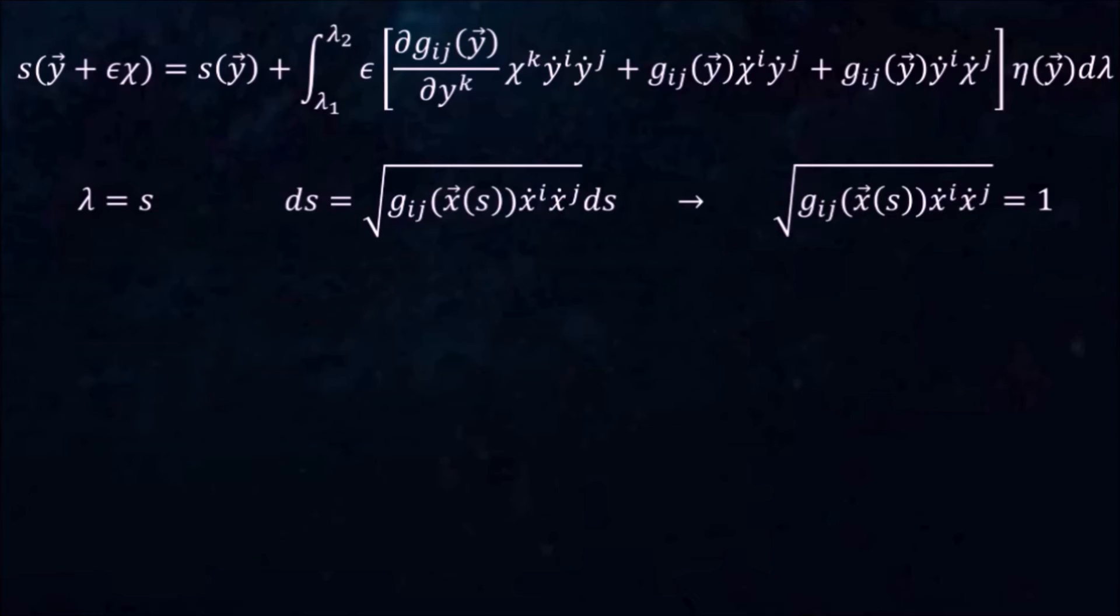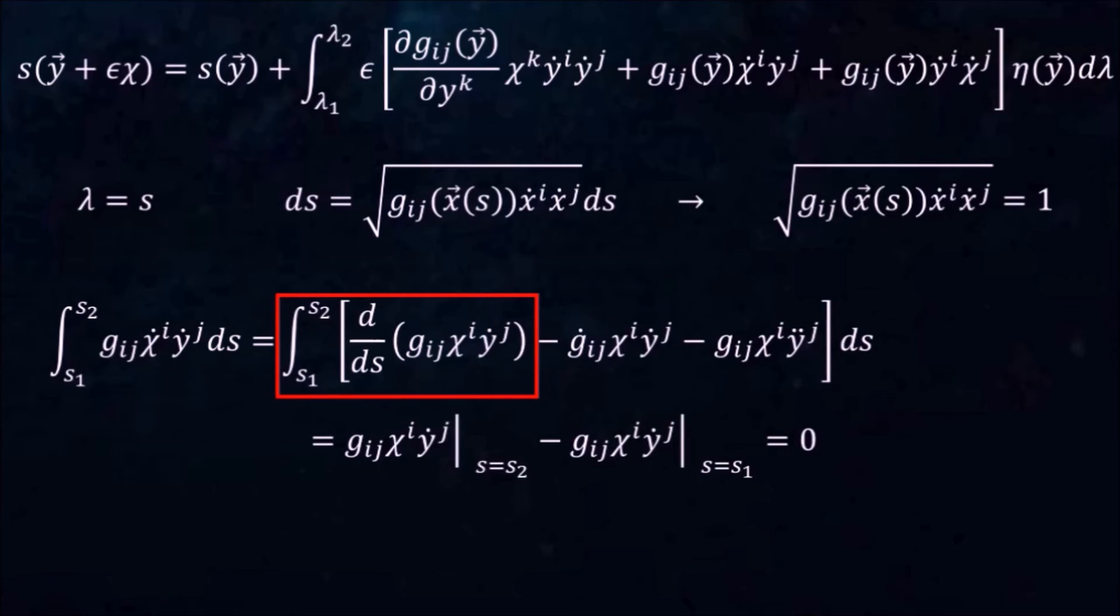Now that we got that out of the way, we can do the integration by parts. The first term can be written as follows. Just carry out the chain rule to convince yourself that this is true. Integration of the first term gives 0 for the simple reason that chi is 0 at the two ends of the curve. What's left then is this.